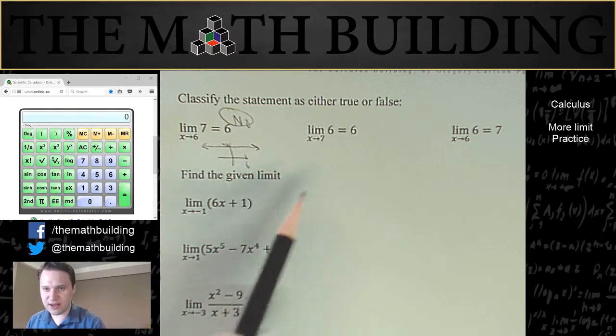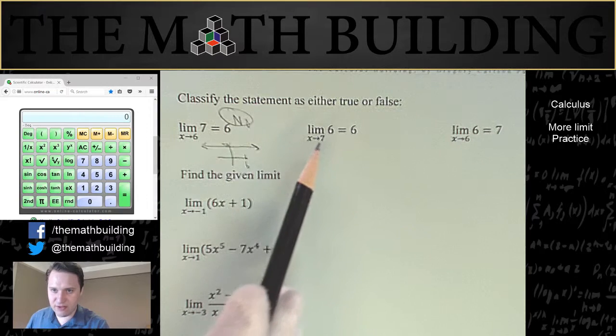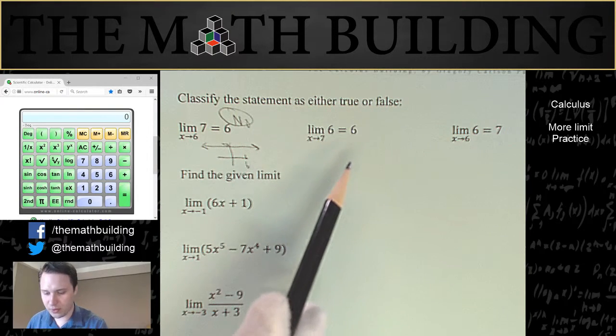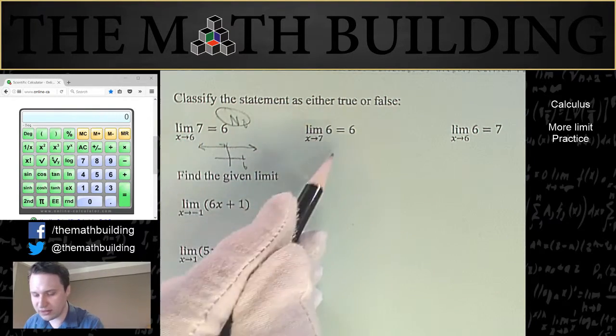What about the second statement? And as you can see, we've flipped the numbers around a little bit. Is the limit of 6 as x approaches 7 equal to 6? Well, this time our function is the number 6. Here our function was the number 7. So we've got the number 6 as our function.